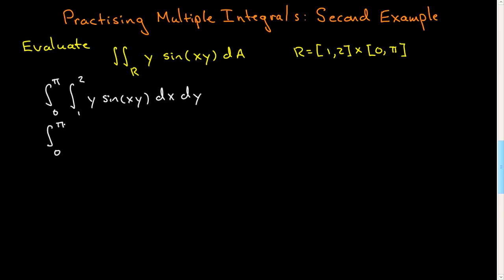Let me bring down my outer integral. I'm going to do this integral over x. Y is a constant here, so the integral of y·sin(xy) with respect to x is simply minus cosine of xy, evaluated between 1 and 2.